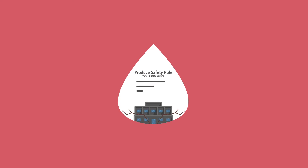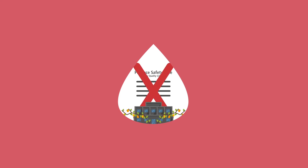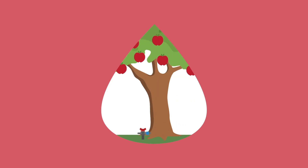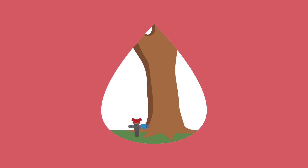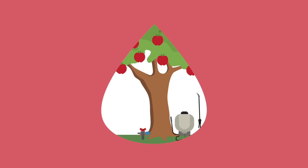Keep in mind that if a farm uses water that does not meet the definition of agricultural water, it is not subject to the agricultural water requirements in the Produce Safety Rule. For example, water that does not contact the produce would not be considered agricultural water, such as water used for drip or furrow irrigation in apple farms. That same water, regardless of where it comes from, would be considered agricultural water if it is used for preparing a crop spray that is applied directly to the apples.